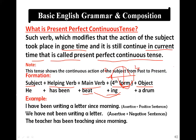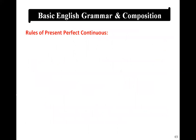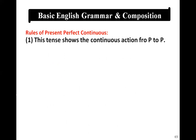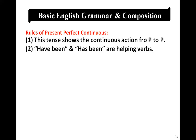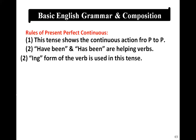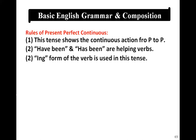Such an action that we start in the past but is still continuing in the present — that is called Present Perfect Continuous Tense. Rules of Present Perfect Continuous: Number one, this tense shows the continuous action from past to present. Have been and has been are the helping verbs of this tense. When we make this kind of sentence, we use 'have been' or 'has been'. The ING form (4th form) of the verb is used in this tense.